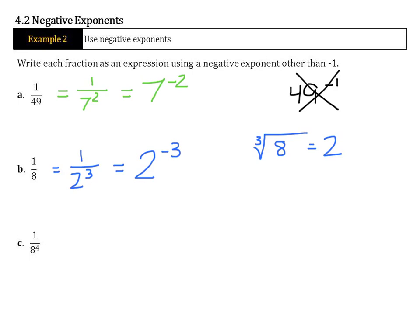Now if we're already given the exponent — for example 1 over 8 to the 4th power — that's even easier: just write it as 8 to the negative 4th. When the exponent is not already given, ask yourself what power gives you that number. With 8, nothing squared works, but 2 to the 3rd does. With 1 over 49, the square root of 49 is 7, so 7 squared must be 49. That's the way you need to look at those.